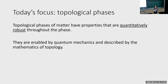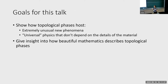So what are topological phases? This slide will be what I'm trying to explain for the rest of this talk. Topological phases of matter have physical properties that are quantitatively robust throughout a phase. They're enabled by quantum mechanics and described by the mathematics of topology. There's a wide range of such phases, and I want to show you how they host highly unusual new physical phenomena, rather universal physics that doesn't really depend on the details of the material, and how beautiful mathematics describes these topological phases.